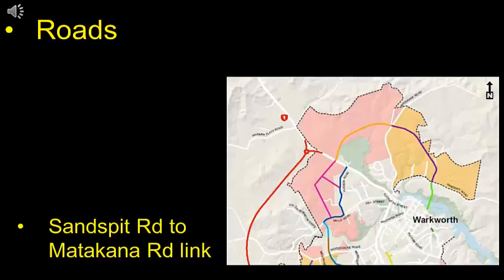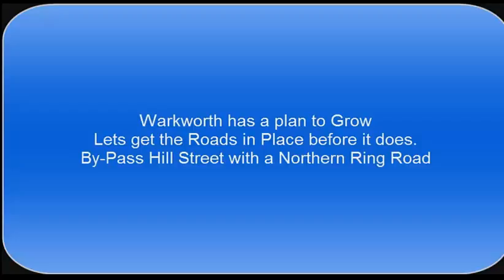The idea of a Sandspit to Matakana Road link has also been around for a while. Back in around 2006, owners of Chestnut Farm put forward a route through their property, but they became insolvent and the idea floundered. Our family resurrected the idea, promoting it with Auckland Council's Transport Committee back in 2011, and through all Council unitary plan and budgetary processes in more recent times. Auckland Transport has recognised the idea and invested in the route shown in purple. We, on the other hand, have another route in mind. Warkworth has a plan to grow, so let's get the roads in place before it does — we need to bypass Hill Street with a Northern Ring Road.